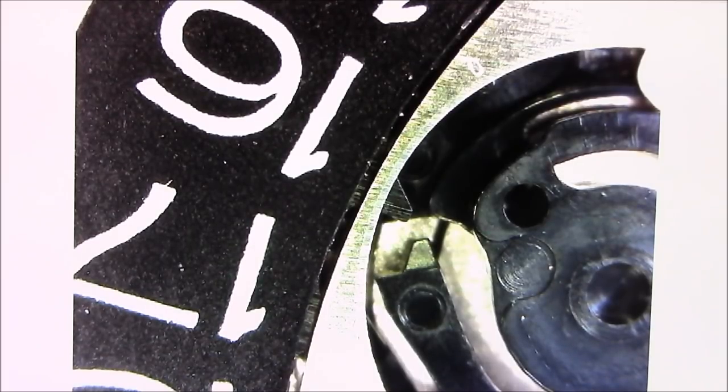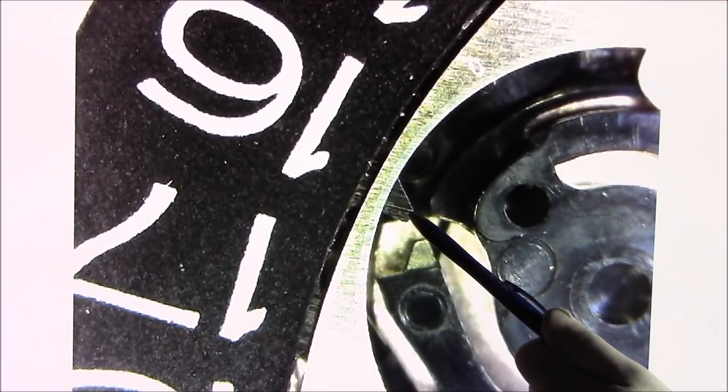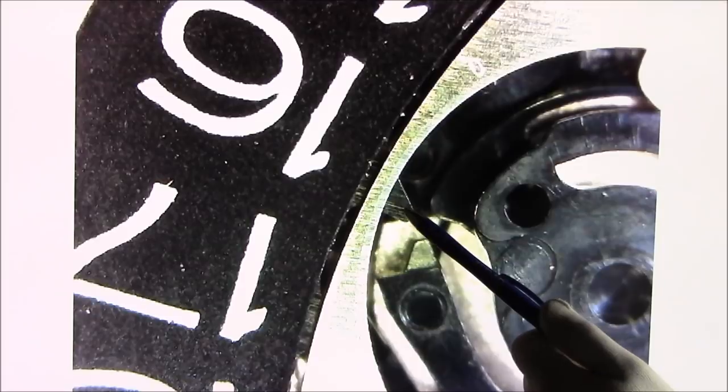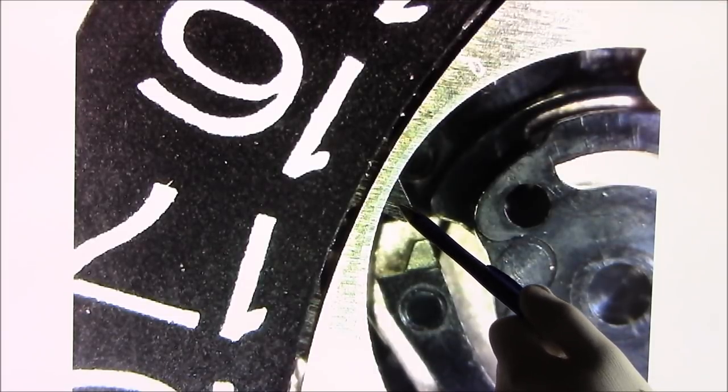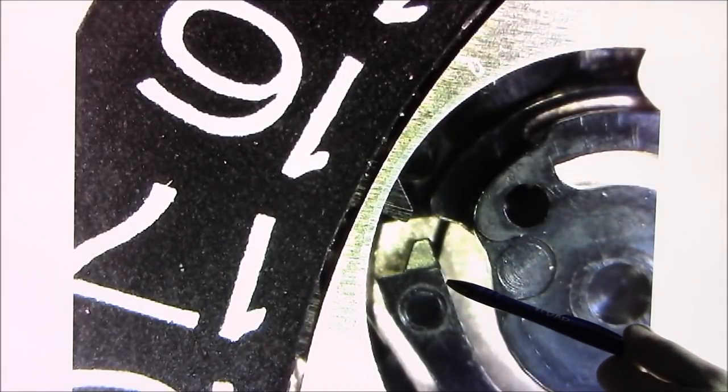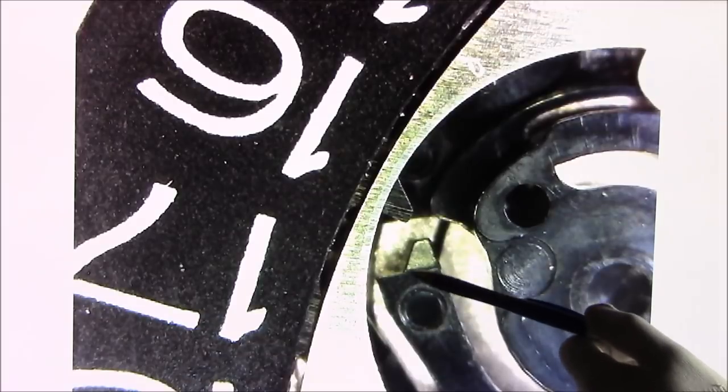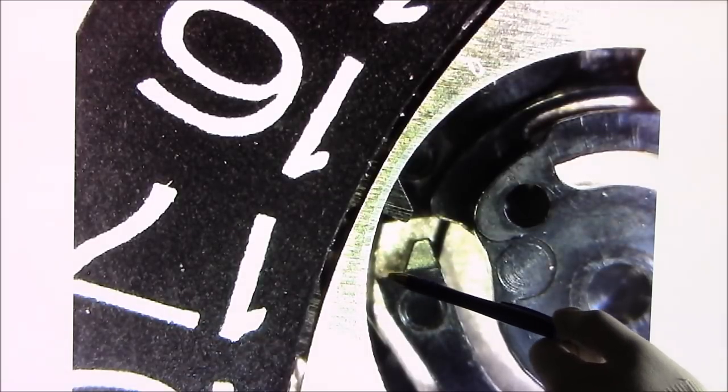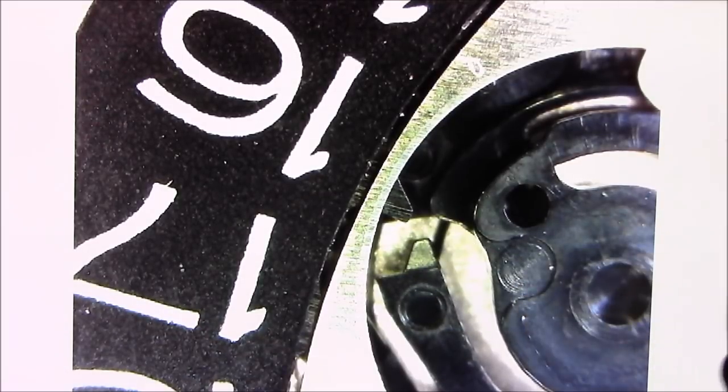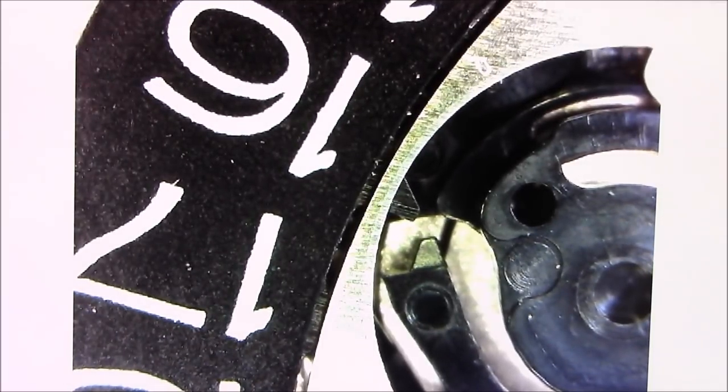Okay, so now we're zoomed in really close on that date wheel, and I want to show you a couple of things. I'll use my pen on the screen because I can't really point at the movement anymore. The scope is too close to it. We have this tooth here, which is opposite to number 16 on the date wheel. And then we have this tooth from the gear that's moving clockwise. This is going to engage this and push it up. So I'm going to try to hold this as still as possible.